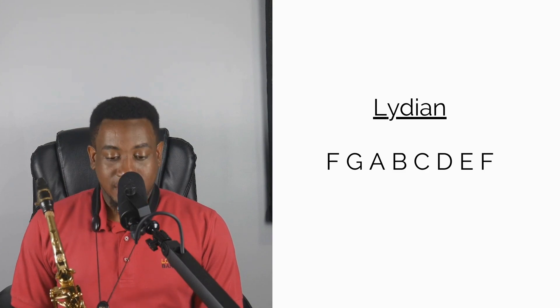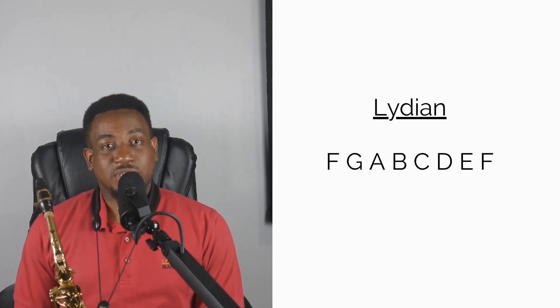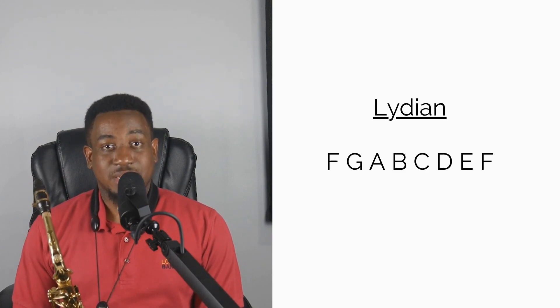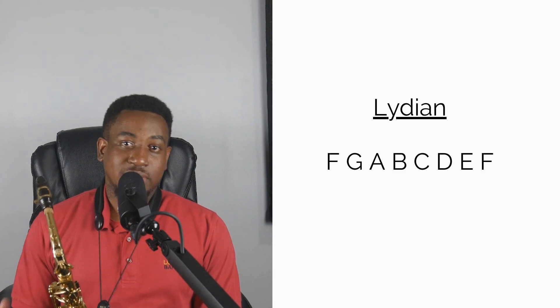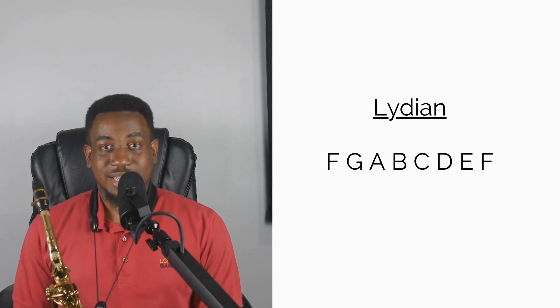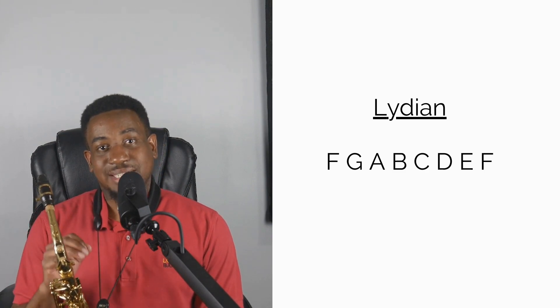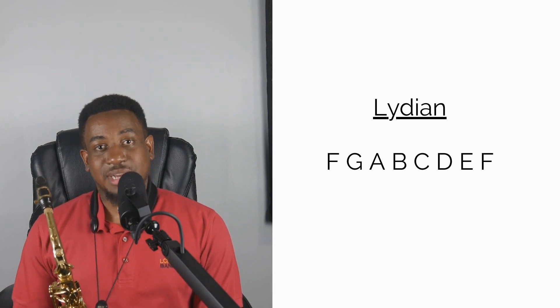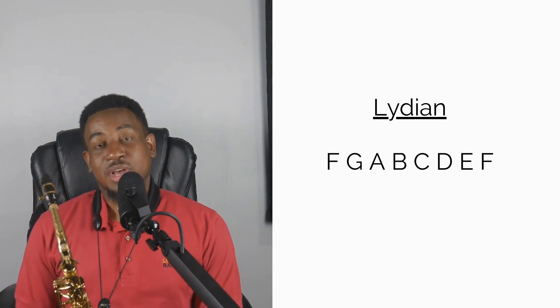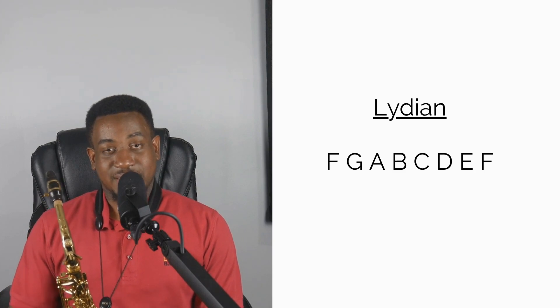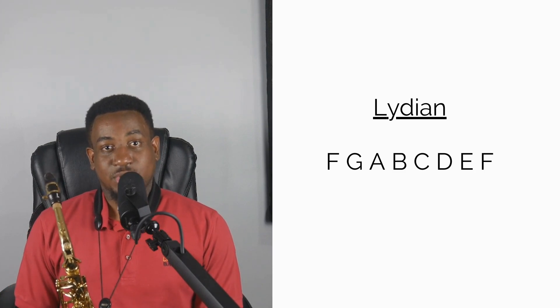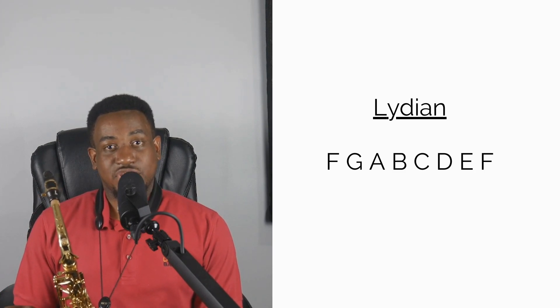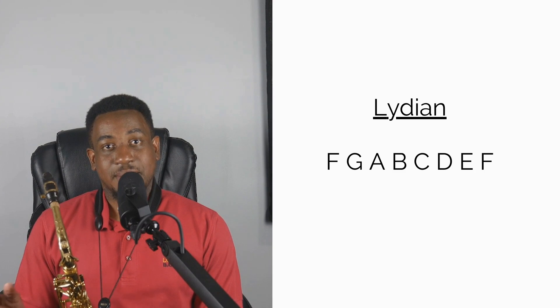The fourth mode is called the Lydian mode. F is the fourth scale degree in the C major scale, so it'll be F Lydian. The notes of the F Lydian scale are F G A B C D E F.